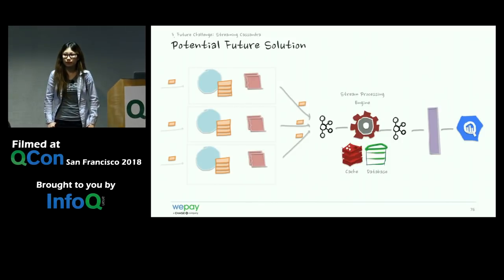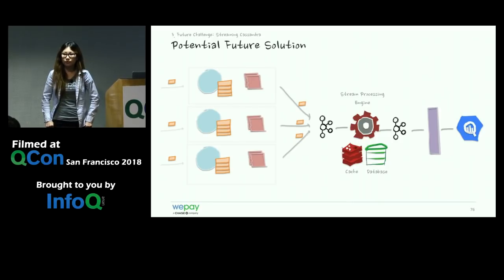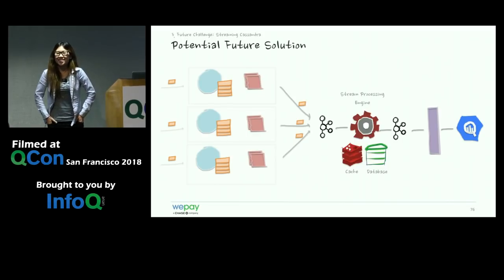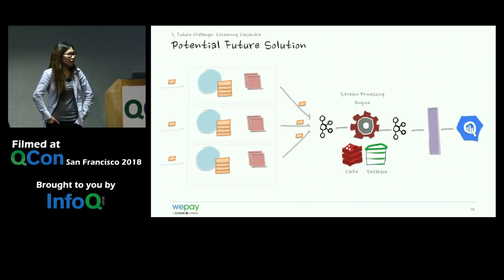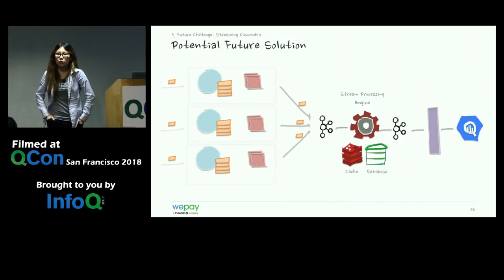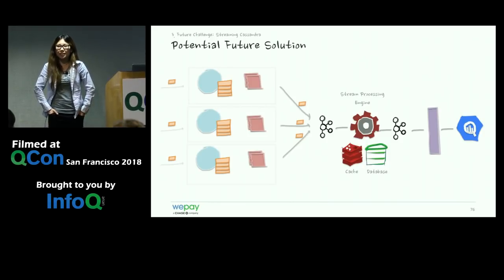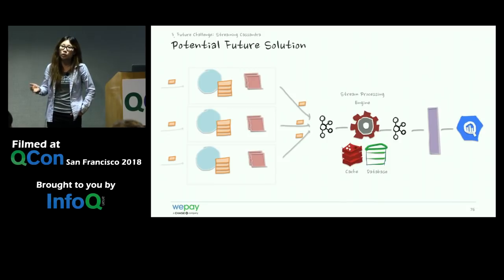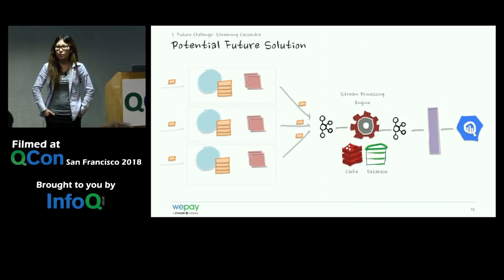Question: Could you use one replica as a master with Zookeeper to coordinate agents so only one sends messages, avoiding duplicates? That was considered, but Cassandra is a peer-to-peer database where all nodes are meant to be equal. Introducing Zookeeper and designating a master node is somewhat against Cassandra's philosophy. It's possible, but we want to follow Cassandra's peer-to-peer design. Currently the replication factor is write-to-all-three.